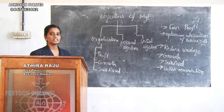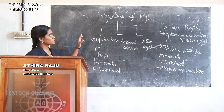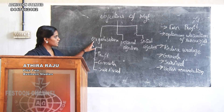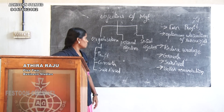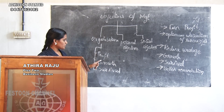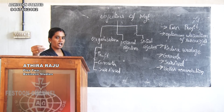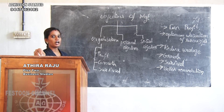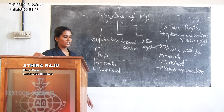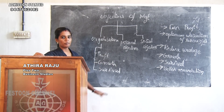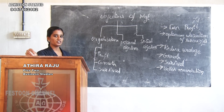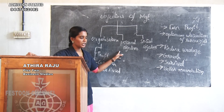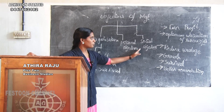These are the main classifications of objectives of management. Objectives of management may be classified into three: organizational objectives, personal objectives, and social objectives. Organizational objectives include profit, growth, and survival. Personal objectives and social objectives are the other two categories.